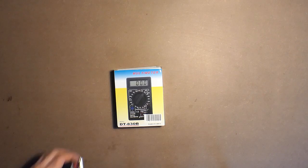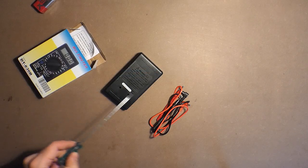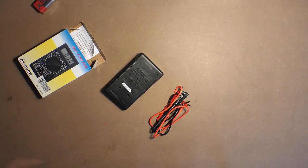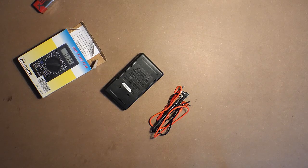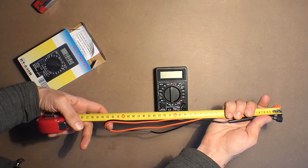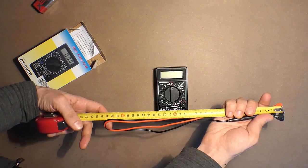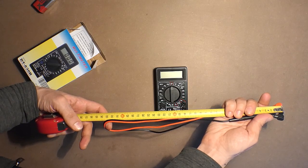This is DT830B. The device operates on 9-volt battery. Here we have no battery compartment and we should unscrew these two screws in order to open the device and insert the battery. The length of the probes is approximately 67 cm.